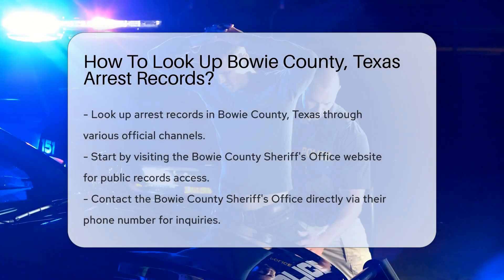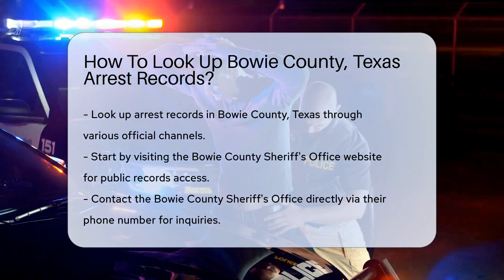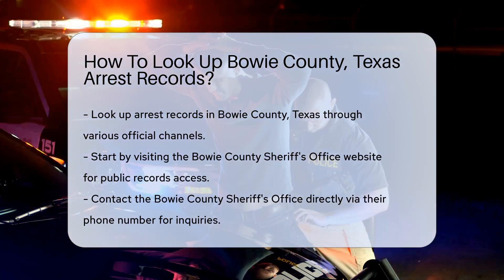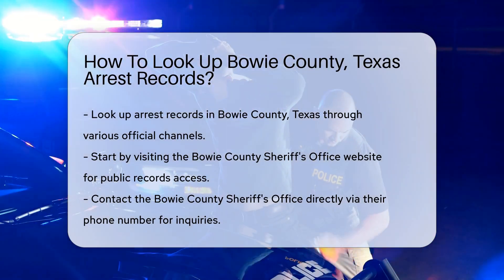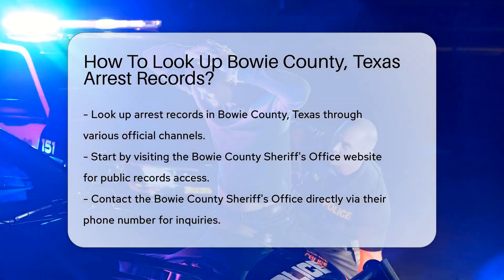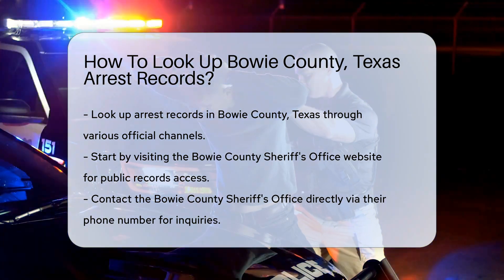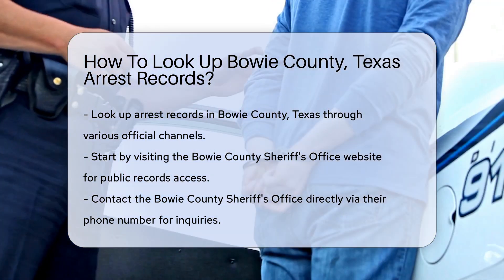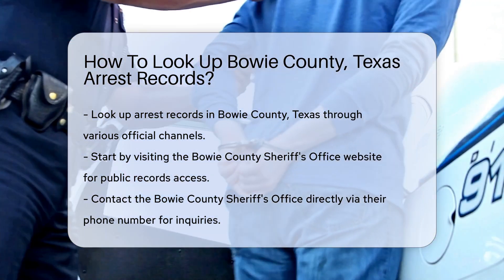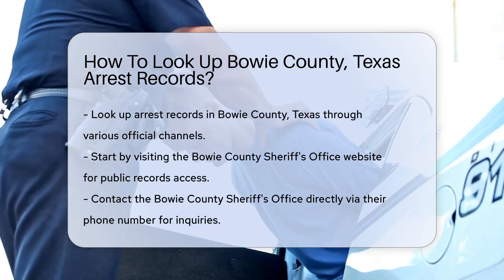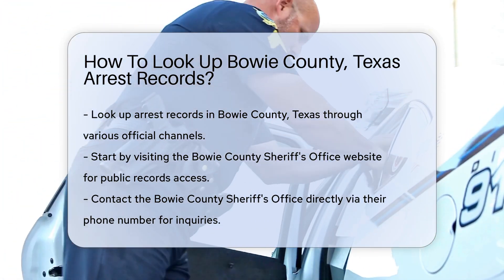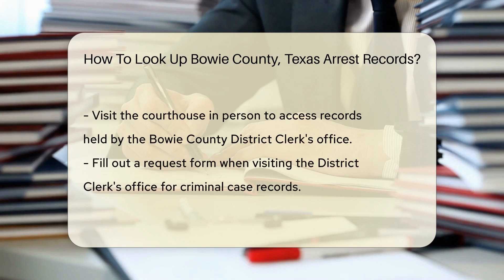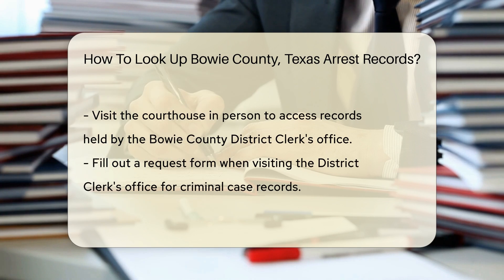Looking up arrest records in Bowie County, Texas can be done through several official channels. Start by visiting the Bowie County Sheriff's Office website — they often provide access to public records. You can also contact the Bowie County Sheriff's Office directly; their phone number is available on their official website. Request information about how to obtain arrest records.